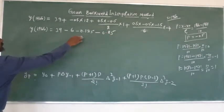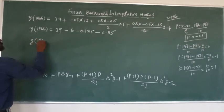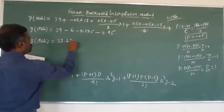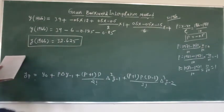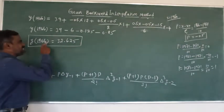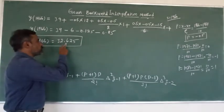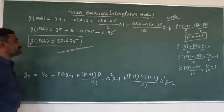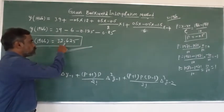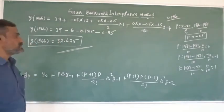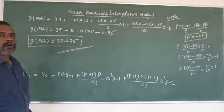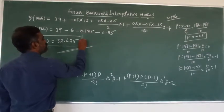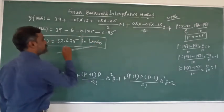Adding all the values, y(1966) = 32.625. Therefore, in the year 1966, the sales are 32.625 lakhs of rupees.